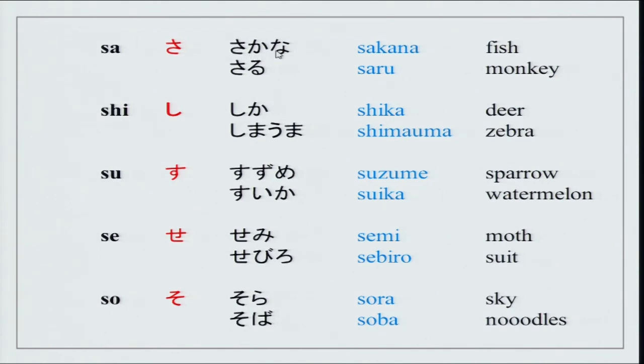For the sa series — and you already know shi is an exception — the vocabulary is: sakana, saru, shika, shimauma, suzume, suika, semi, sebiro, sora, soba.